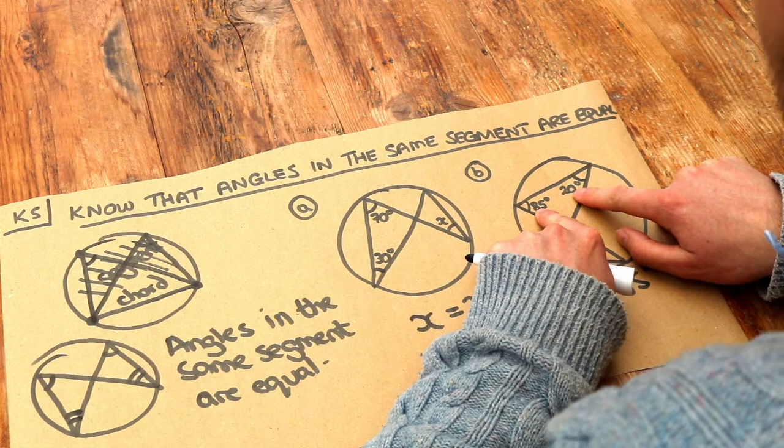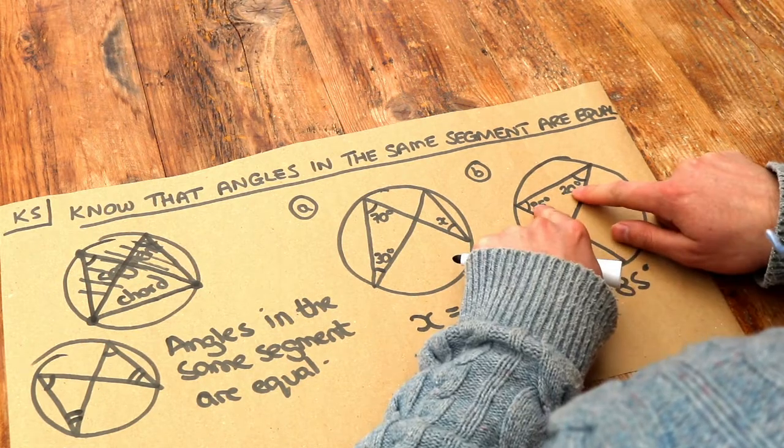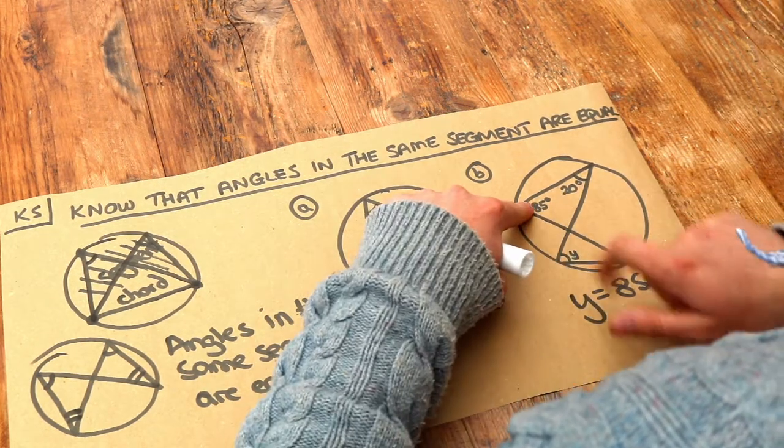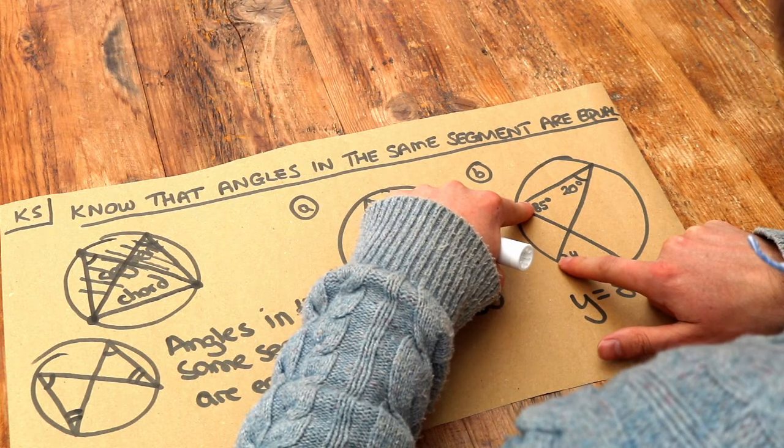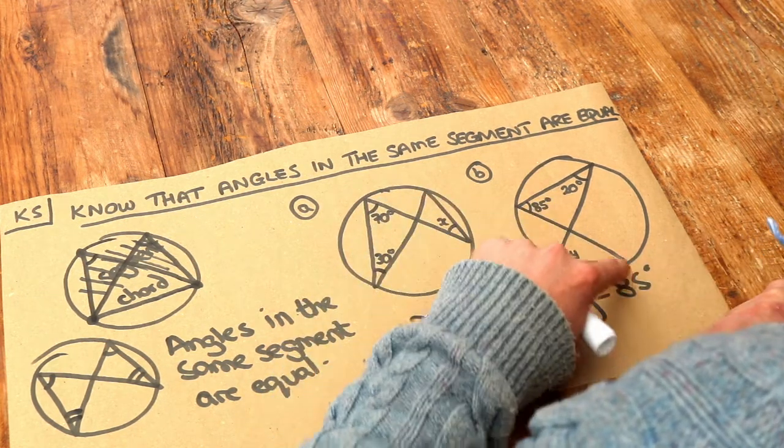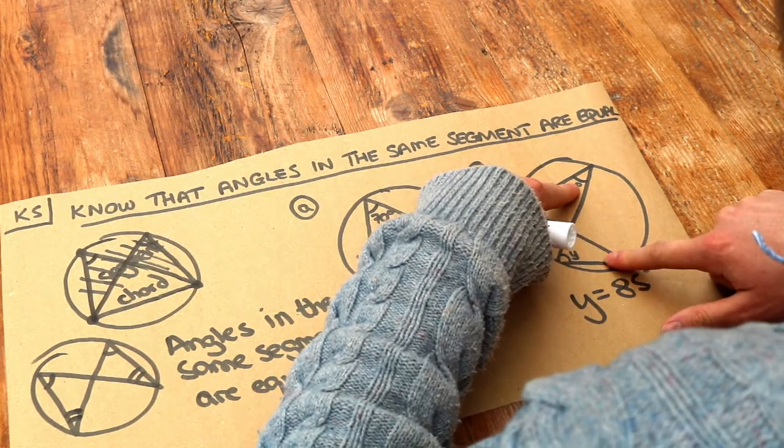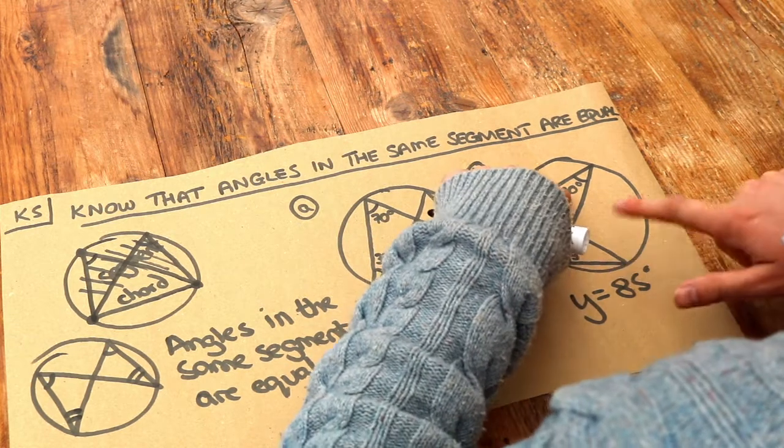So we can't for example use these two angles and say well they're both at the top because they're in the same triangle. We've got an angle here and an angle in a different triangle but both on the left so those are equal. And then we've got an angle here and an angle also on the right but in a different triangle so they're both 20.